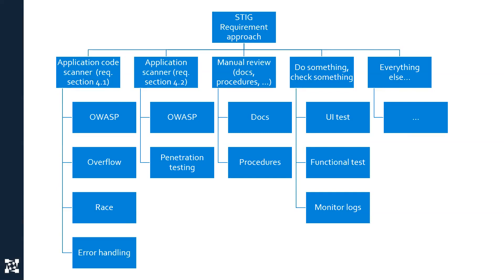There's also a bucket Wilhelm named 'do something, check something.' It's similar to a UI test or functional test — for example, go to the admin interface and make sure the password policy is set to a minimum of 12 characters, then go to the UI and try to set a password of fewer than 12 characters, then check logging to see if it was recorded. If you're a tester and someone says you need to do this DISA thing for a security audit, just think of it like functional or UI testing — because that's what it feels like.